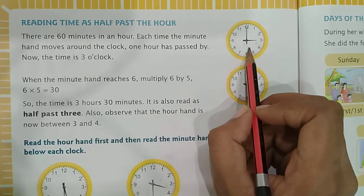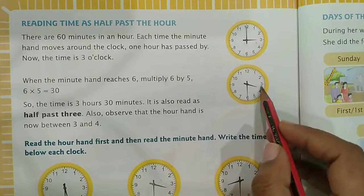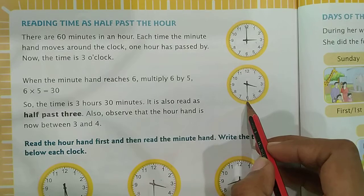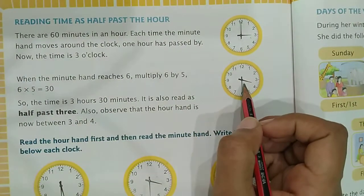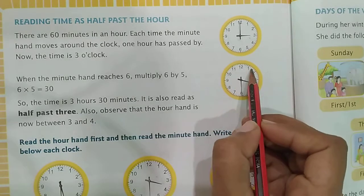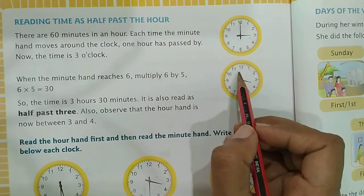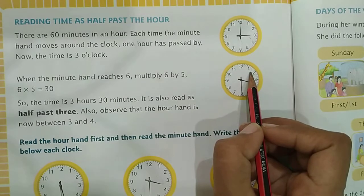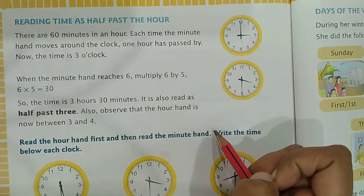Now the time is 3 o'clock. So bachay, when the minute hand reaches 6, multiply 6 by 5. 6 into 5 equals 30. It means it is 3 hours 30 minutes. We multiply by 5 because between 12 and 1 there is a difference of 5 — when the minute hand goes from 12 to 1, it means 5 minutes have passed. So it is also read as half past 3.